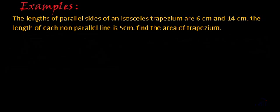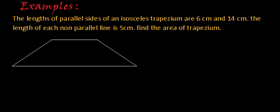So what we have? We have one isosceles trapezium. An isosceles trapezium is a trapezium where the length of two non-parallel sides is the same. Suppose this is the trapezium. They are saying it is an isosceles trapezium where the length of each non-parallel side is 5 centimeters — this side is 5 centimeters and this side is also 5 centimeters.